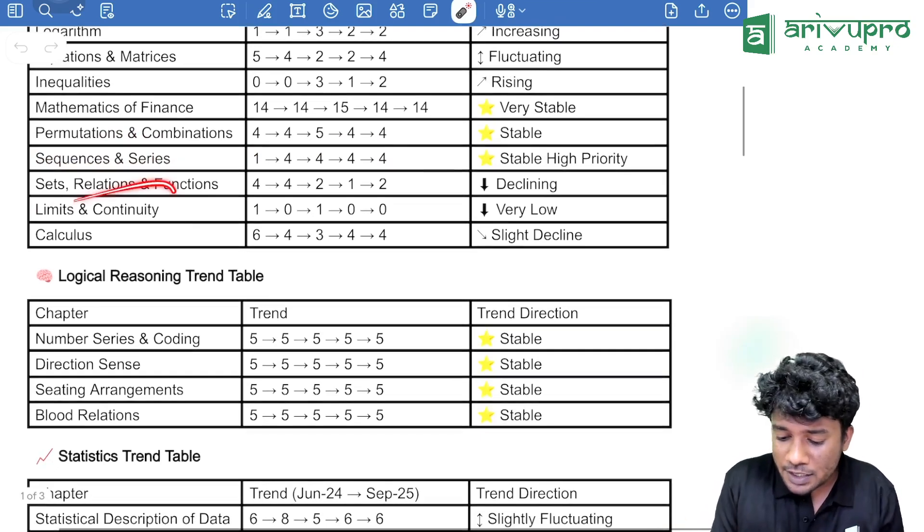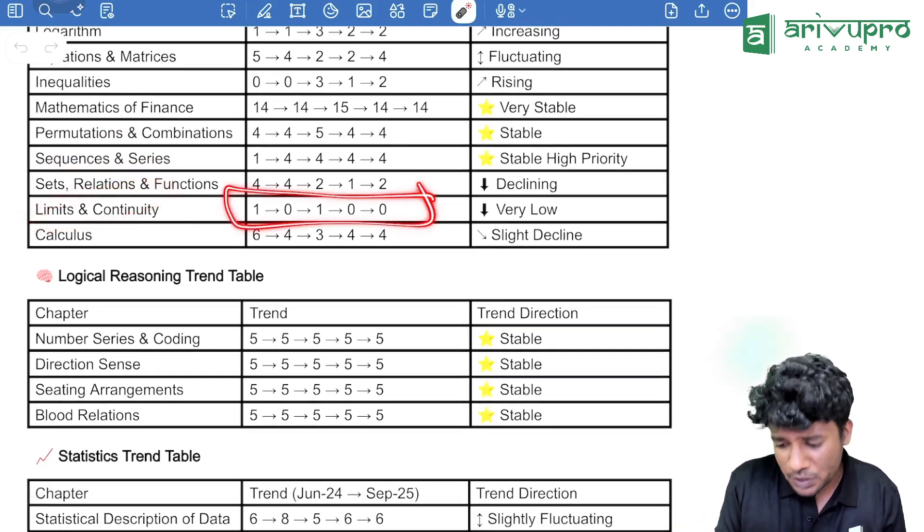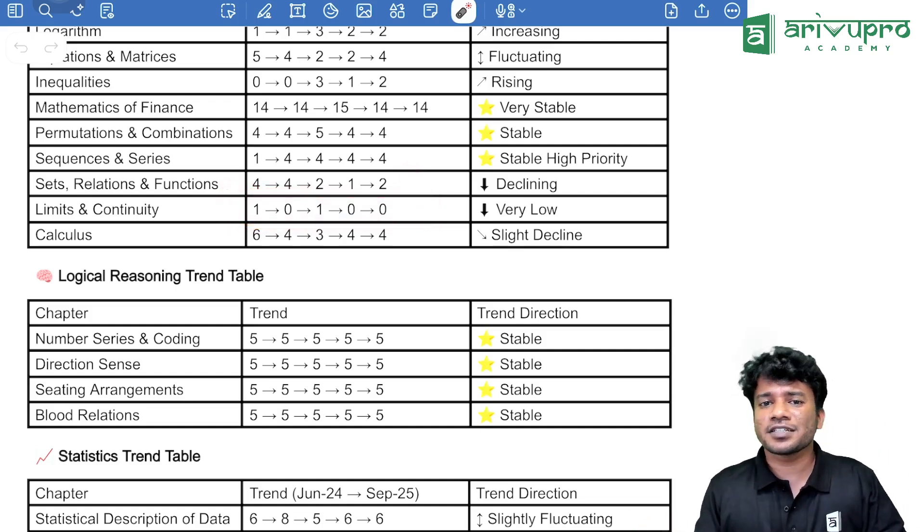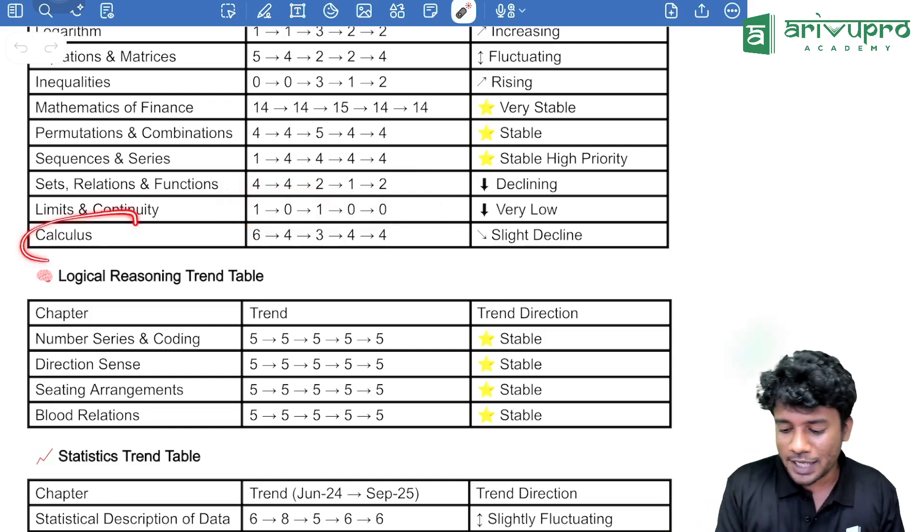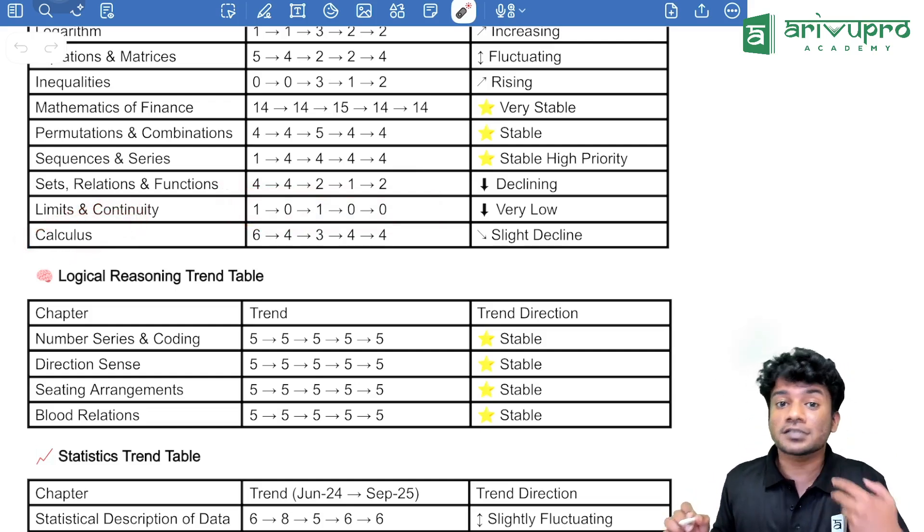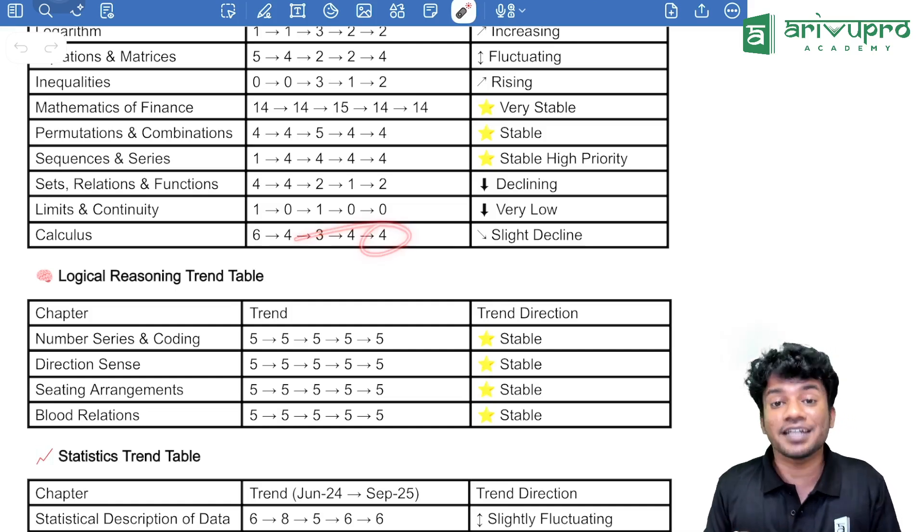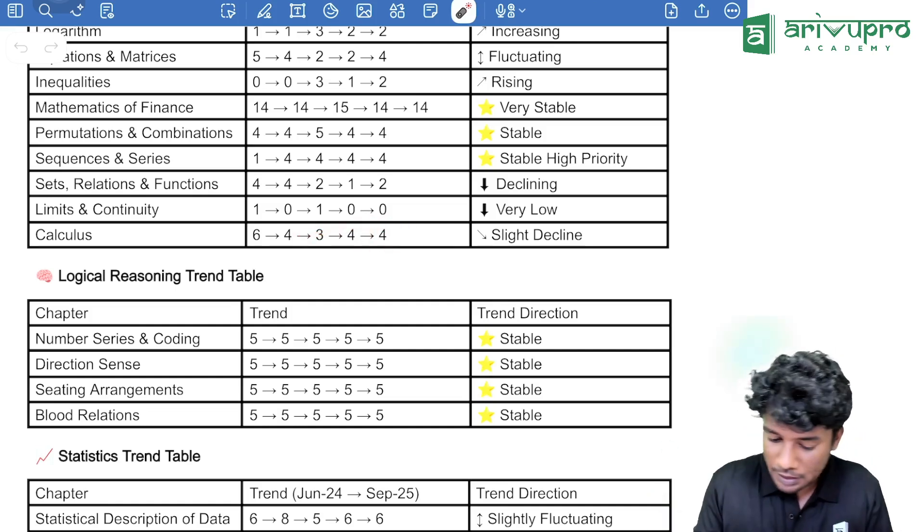Now, coming to limits and continuity, if you ask me, the weightage of that particular topic is very less nowadays. It is 1, 0, 1, 0, 0, 0. Then, calculus, if you ask me, 4 marks is usually from there, differentiation and integration, that usual thing is there.